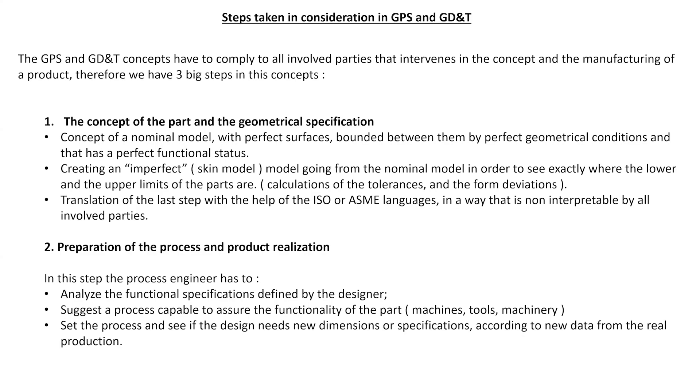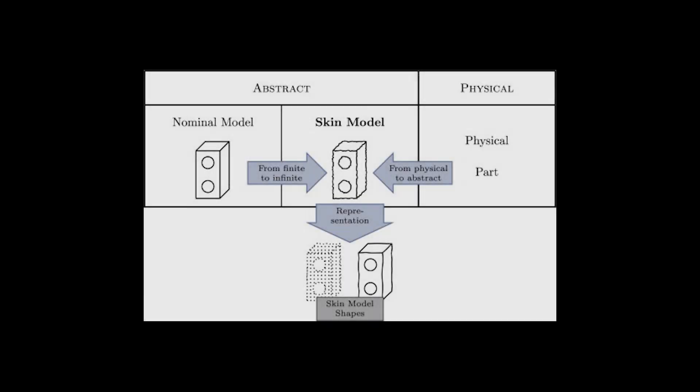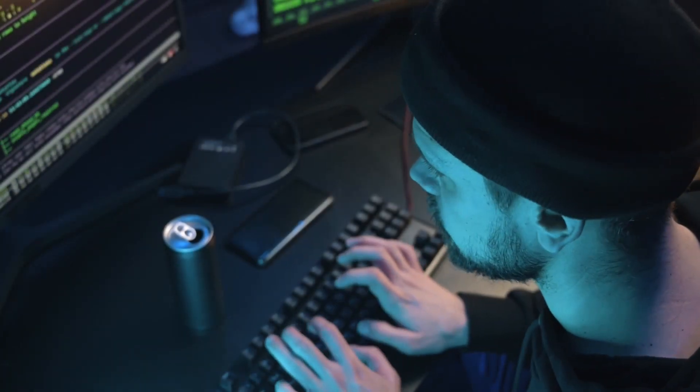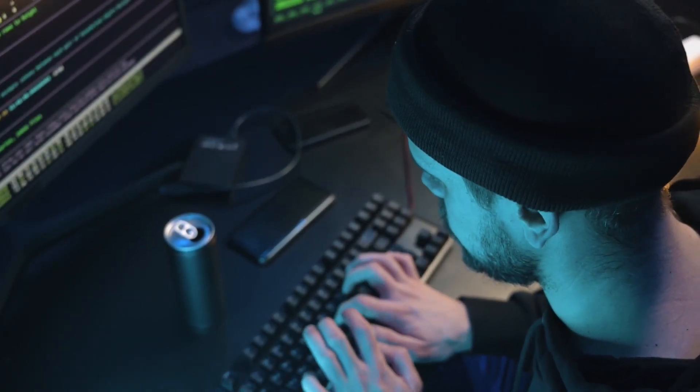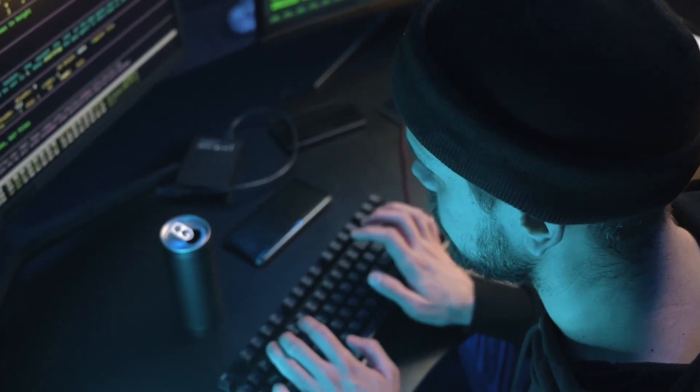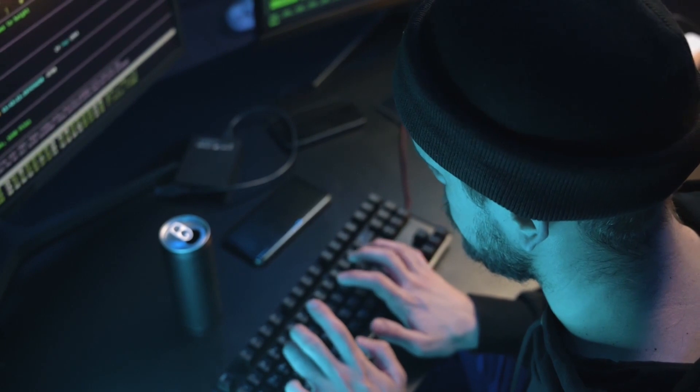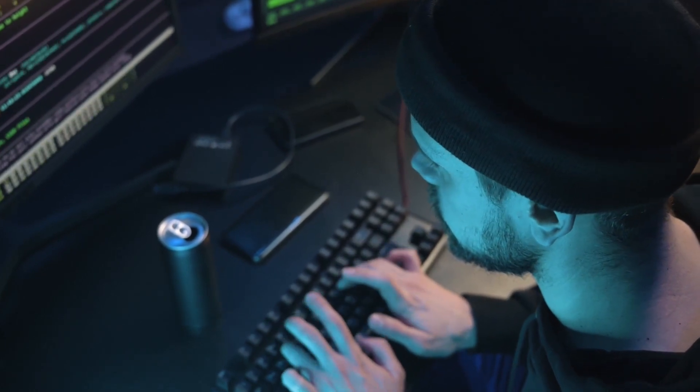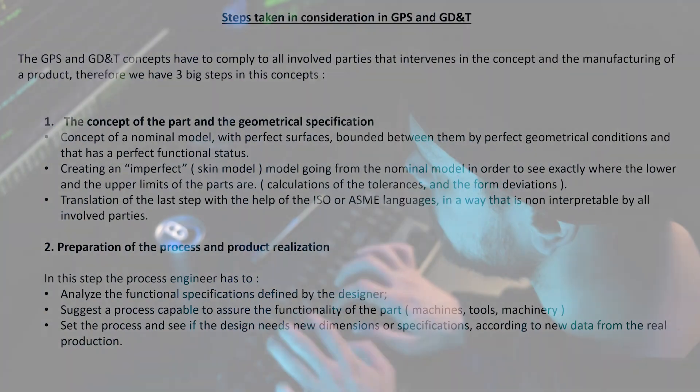Creating an imperfect or a skin model, as it is also called, going from the nominal model is in order to see exactly where the lower and the upper limits of the parts are. So these are the calculations of the tolerances and the form deviations. This is how the mechanical designer calculates what kind of limits should they put on the drawing in order for the part to be fine and to be according to the specifications from the customer.